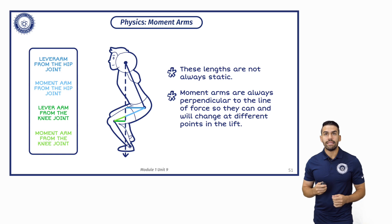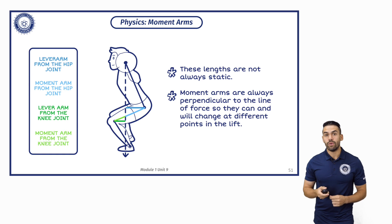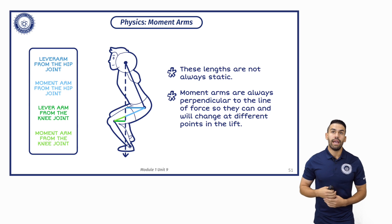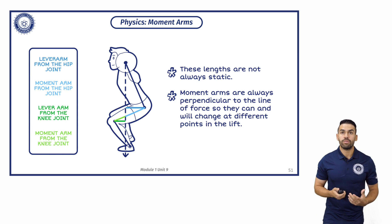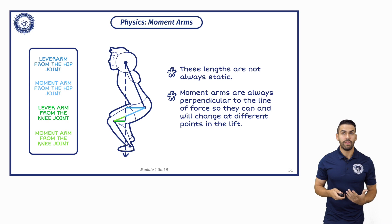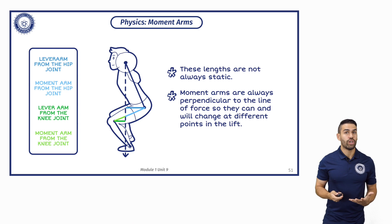These lengths are not always static — they're constantly changing as you go through a range of motion. The moment arms are always going to be perpendicular to your line of force, so they can and will change at different points of the lift.